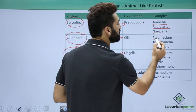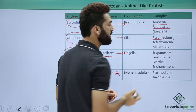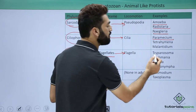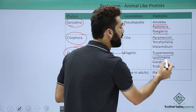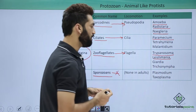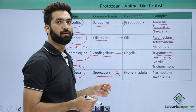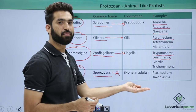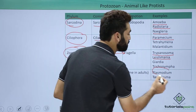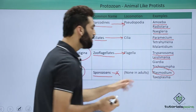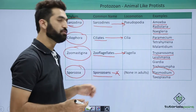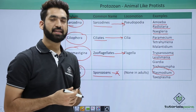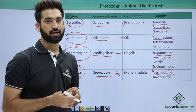When you talk about ciliates, one important name you must have heard about is Paramecia. When you talk about zoo flagellates, one important name is Trypanosoma and Leishmania. For sporozoa, you have the malaria-causing protist which is called Plasmodium, and Plasmodium belongs to the Sporozoa. The next session will be starting with Kingdom Fungi.